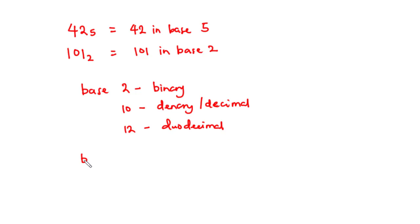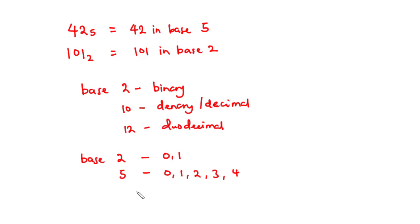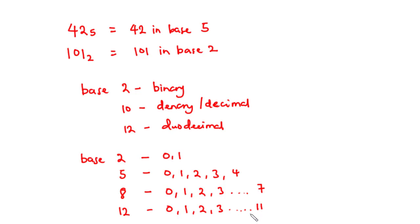Notice that base 2 has 2 digits — that is 0 and 1. Base 5 has 5 digits: 0, 1, 2, 3, and 4. So always, the last value is 1 less than the base value. For base 8, we are also going to have 8 digits — that is 0, 1, 2, 3, through to 7. And then for base 12, we also have 0, 1, 2, 3, through to 11. However, when dealing with base 12, instead of writing 10 and 11, we represent those values with t and e respectively.